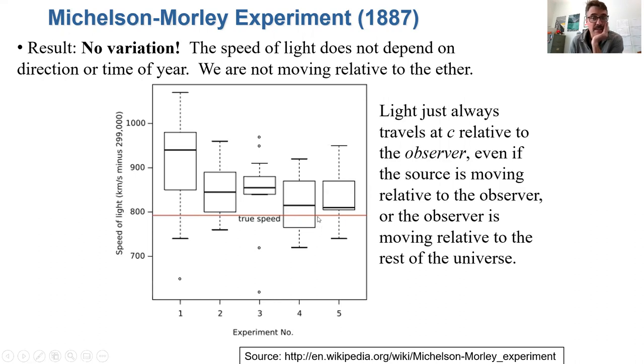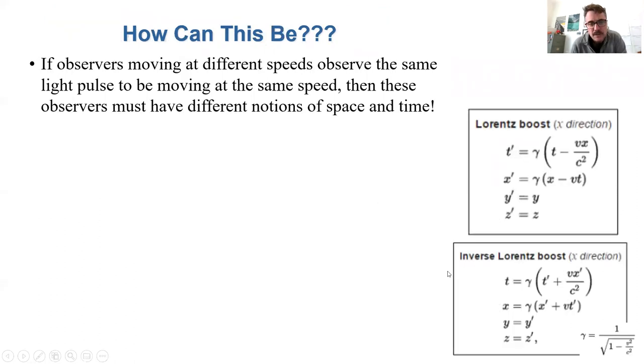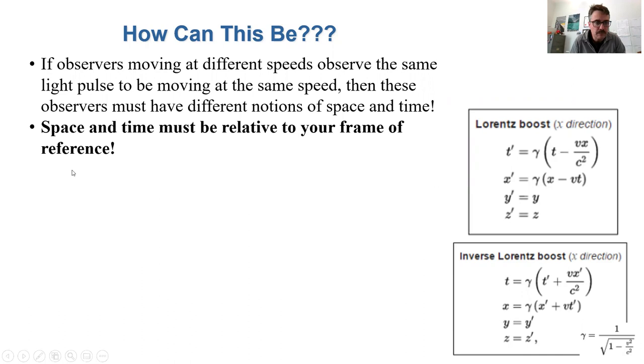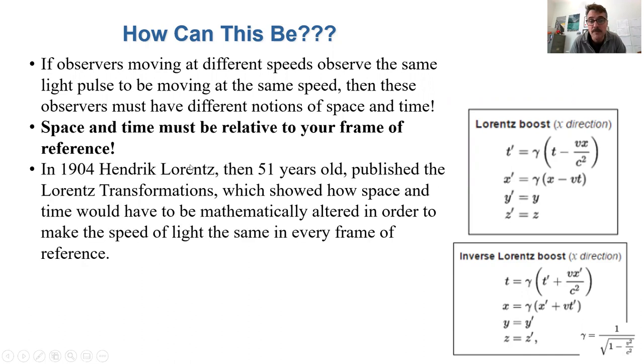Light just always travels at speed c relative to the person doing the observing, even if the observer is moving relative to the rest of the universe. So how can this be? If observers moving at different speeds observe the same light pulse to be moving at the same speed, how could that be? It turns out that the problem is that the stopwatches and the meter sticks are different for the different observers. They have different notions of time and they have different notions of length. So space and time are relative to your frame of reference.